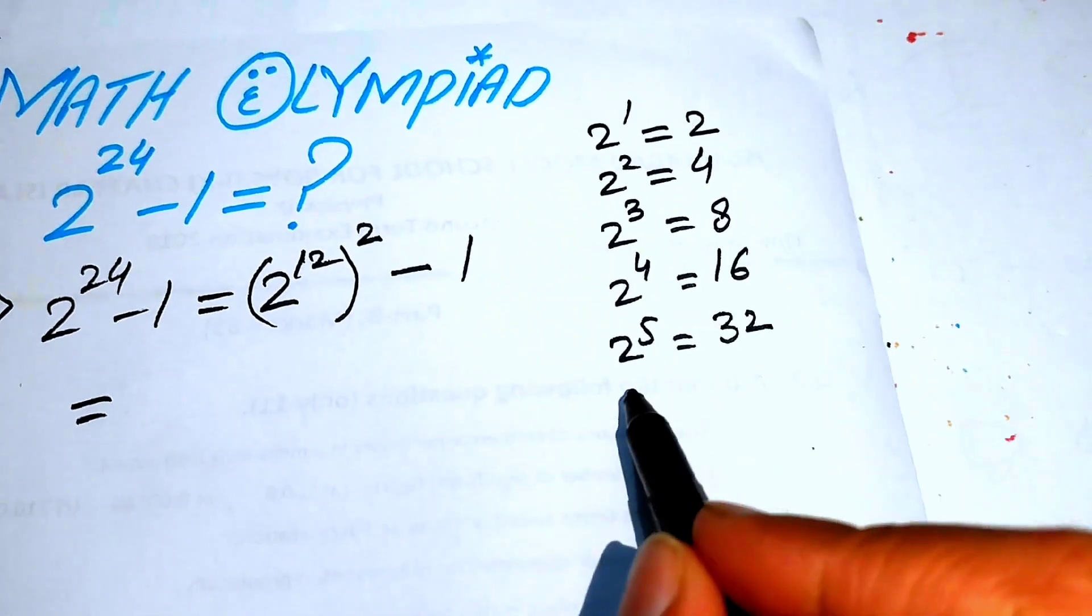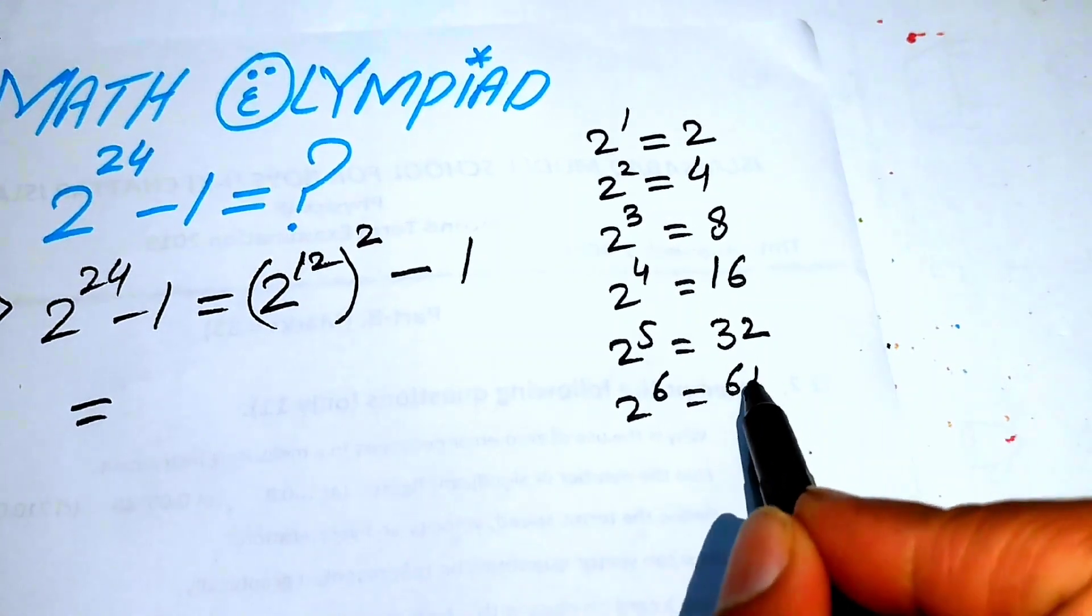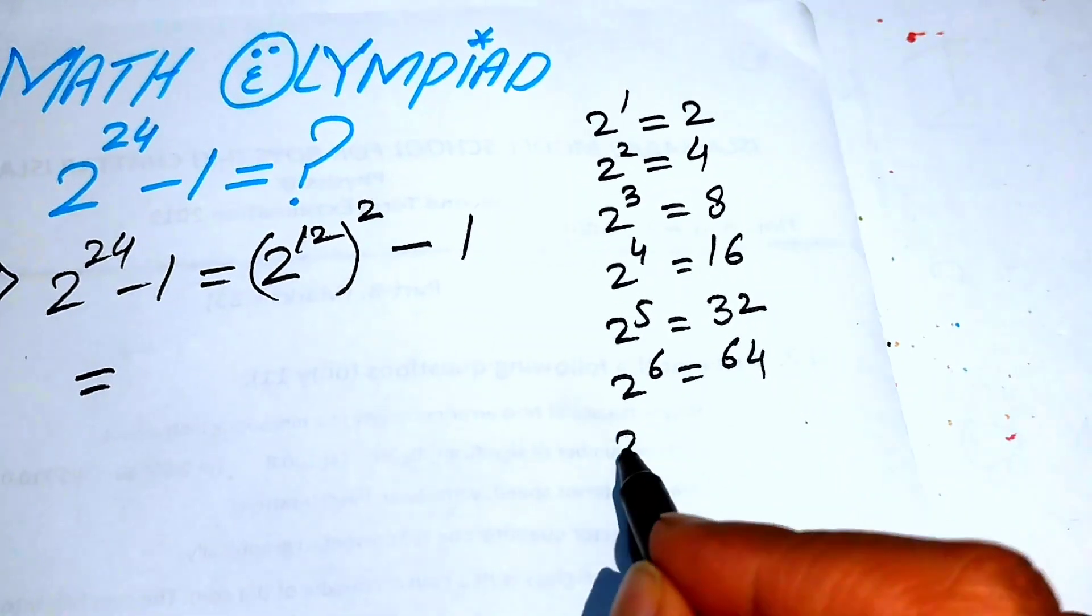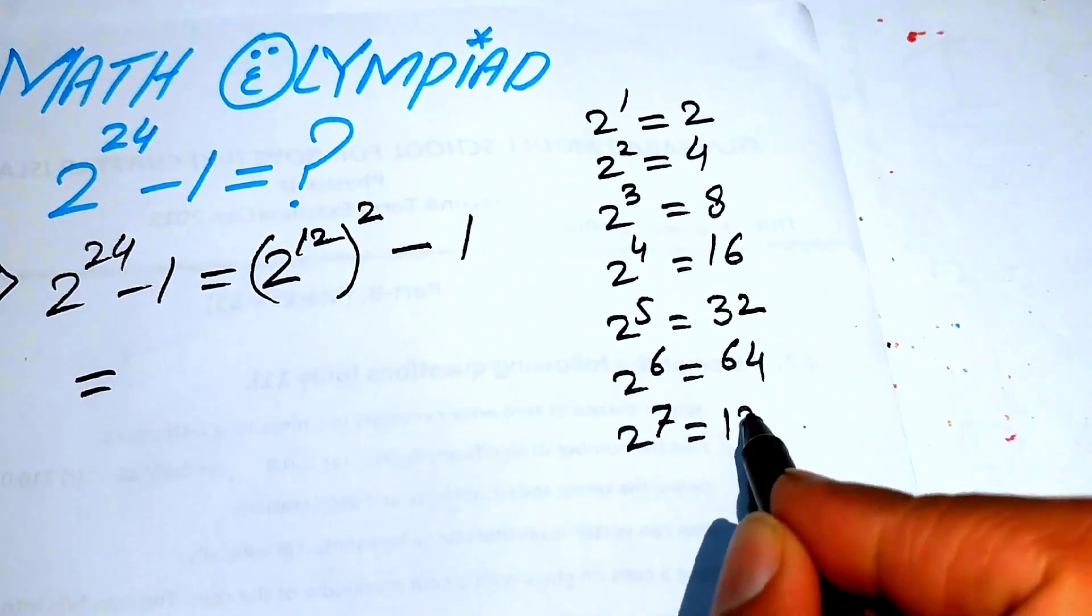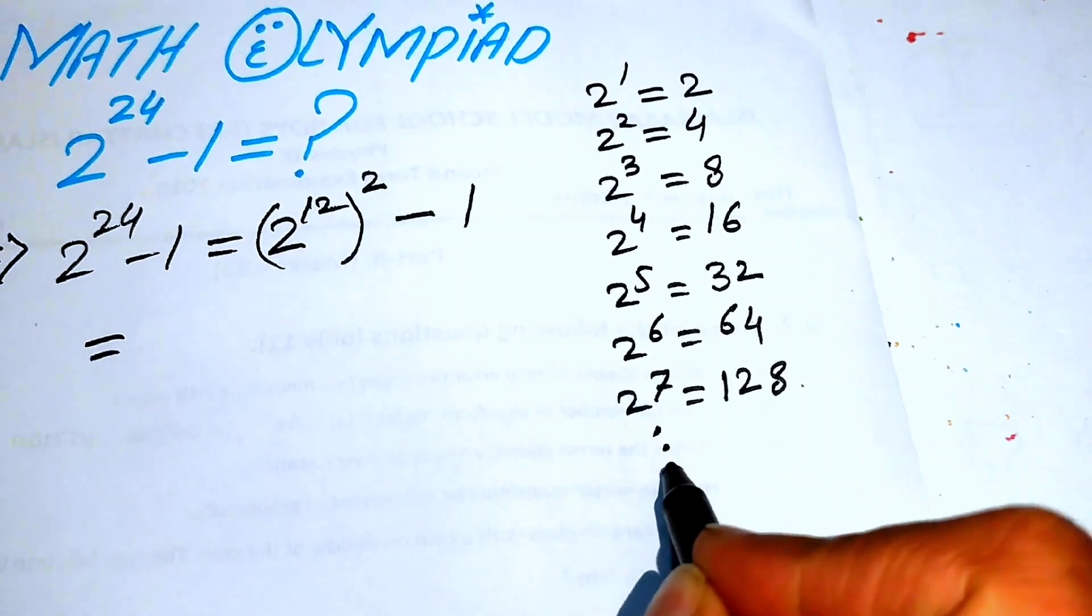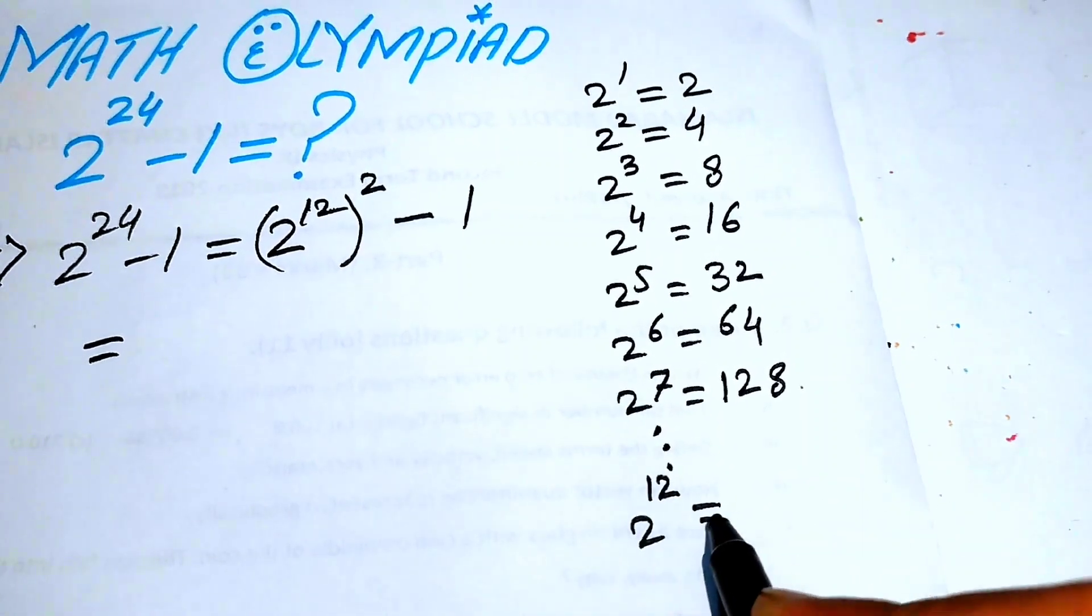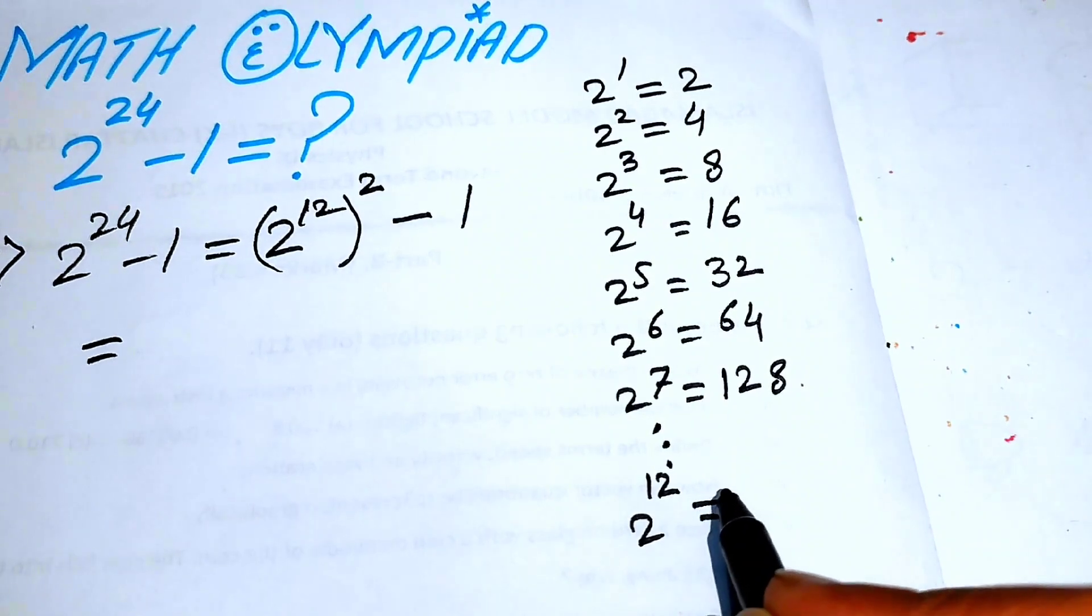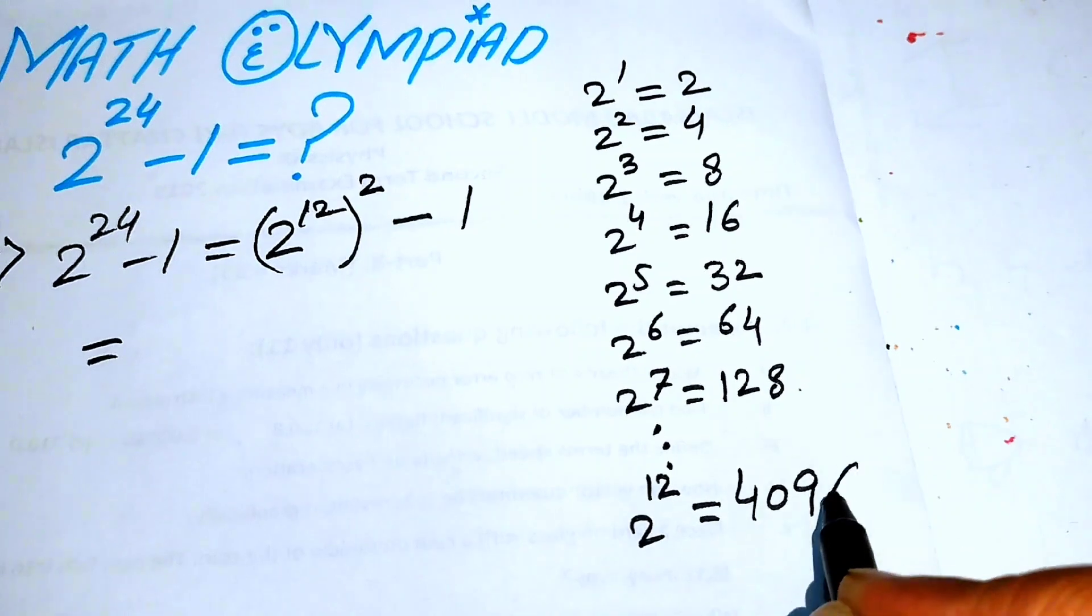We have 2 to the power of 6: we multiply 32 by 2, it becomes 64. And 2 to the power of 7: we multiply 64 by 2 and it becomes 128. Similarly, in this procedure you move up to 2 to the power of 12 and we get the value of 2 to the power of 12 is 4096.